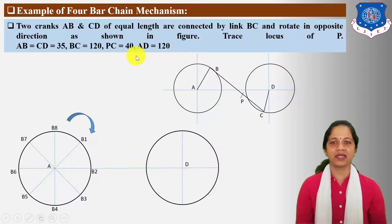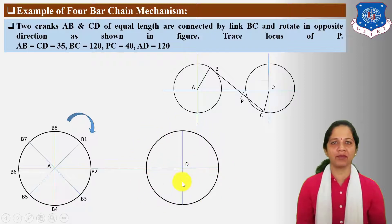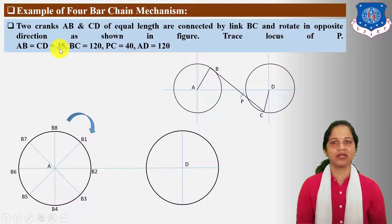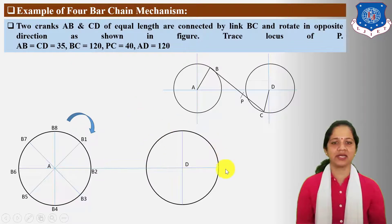Next, draw a circle for point C. The distance of AD is given 120 mm. From point D, draw a 35 mm radius circle because the length of crank CD is also given as 35 mm. This circle indicates the path of point C.